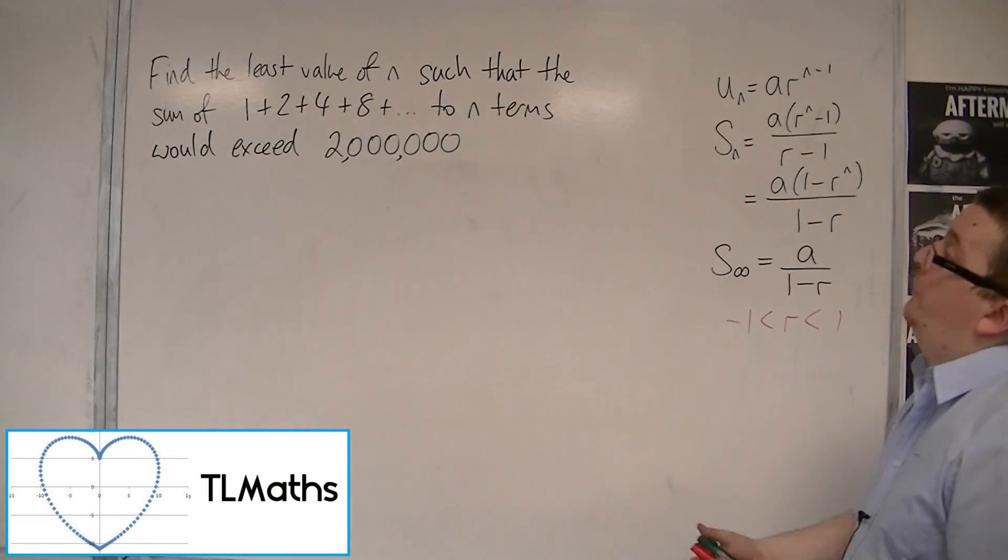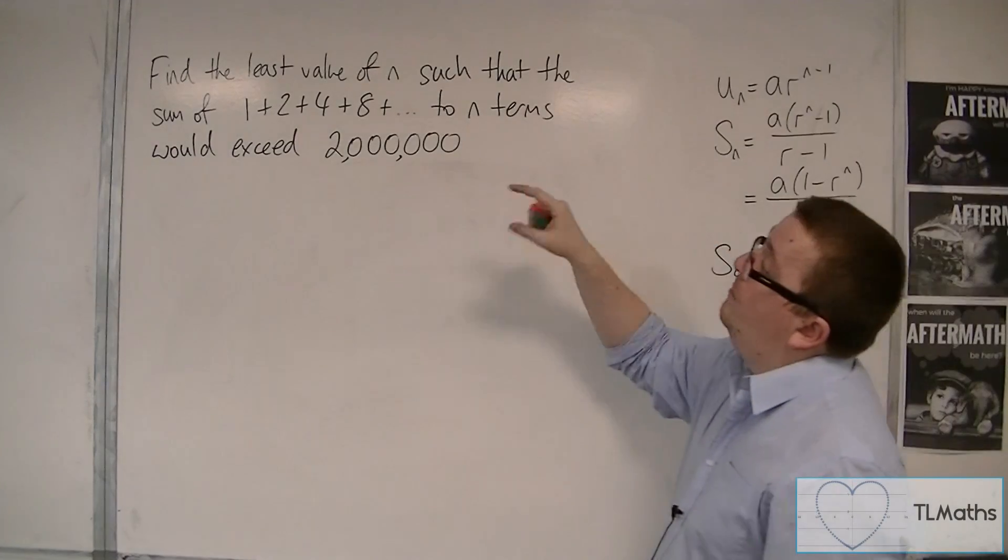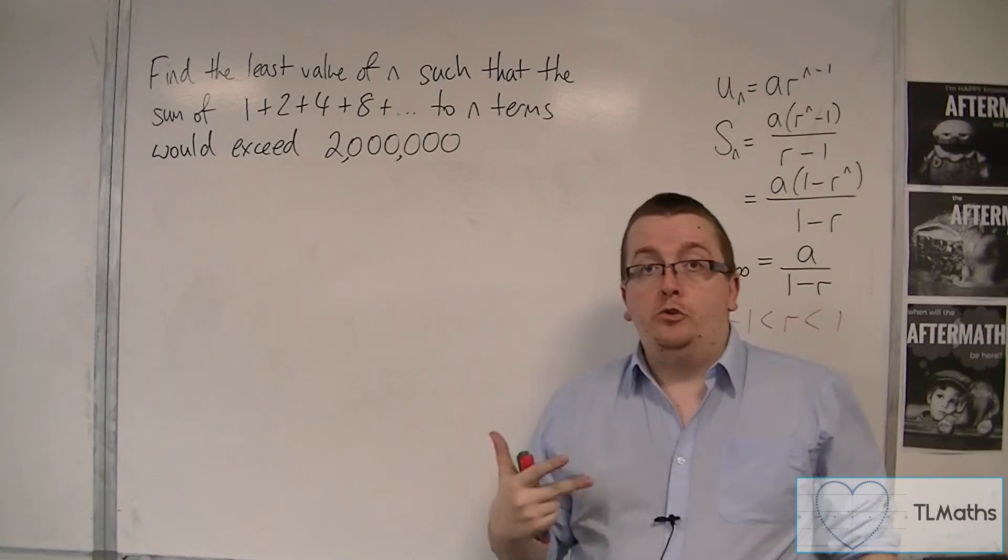So in this problem, we have to find the least value of n such that the sum of 1 plus 2 plus 4 plus 8 plus and so on to n terms would exceed 2 million.